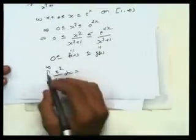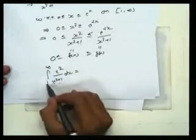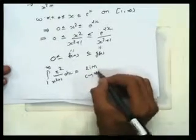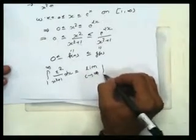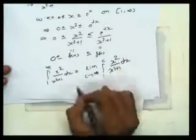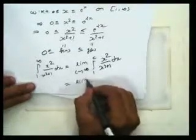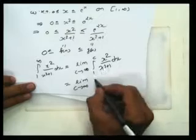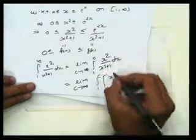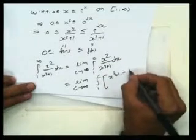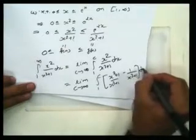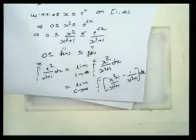The integral of x²/(x²+1) from 1 to infinity is an improper integral of the first kind. We replace infinity by c, writing the limit as c→∞ of the integral from 1 to c. We rewrite the integrand by adding and subtracting 1: (x²+1−1)/(x²+1).